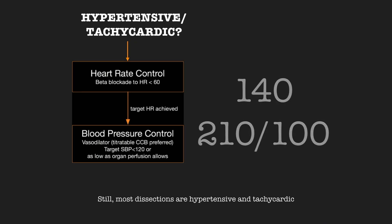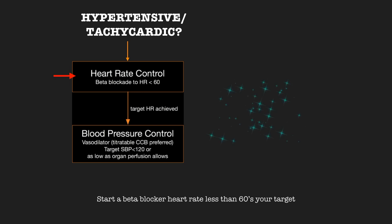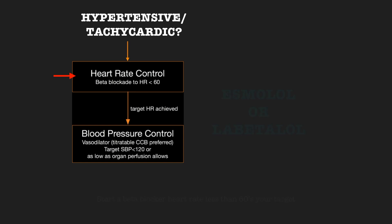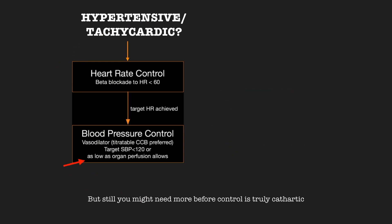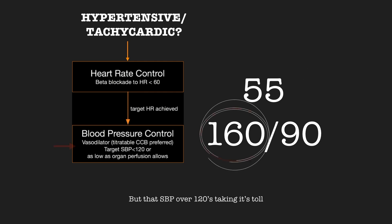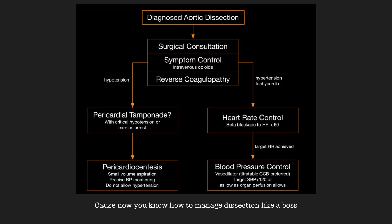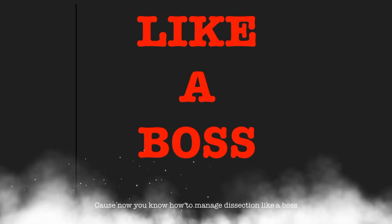Still, most dissections are hypertensive and tachycardic. They need impulse control to stop more dissection. Getting started — start a beta blocker. Heart rate less than 60 is your target. But still you might need more before control is truly achieved. Now you got pain and heart rate fully under control, but that BP over 120 is taking its toll. Keep calm, titrate a CCB. You ain't at a loss — cause now you know how to manage dissection like a boss.